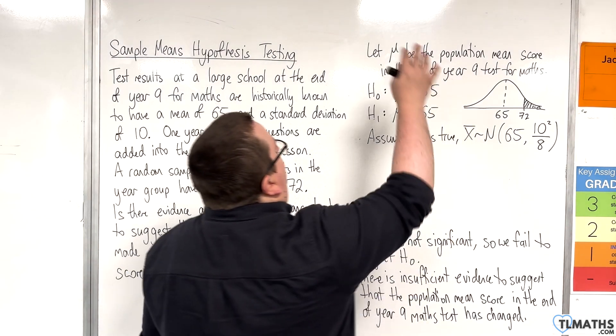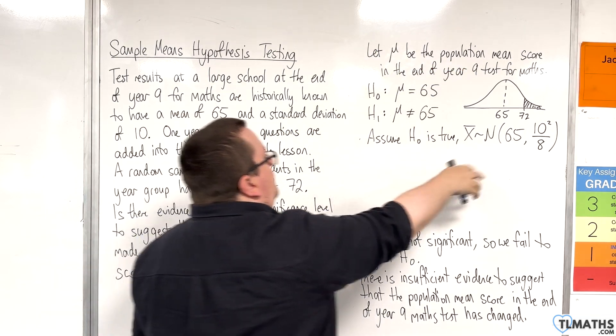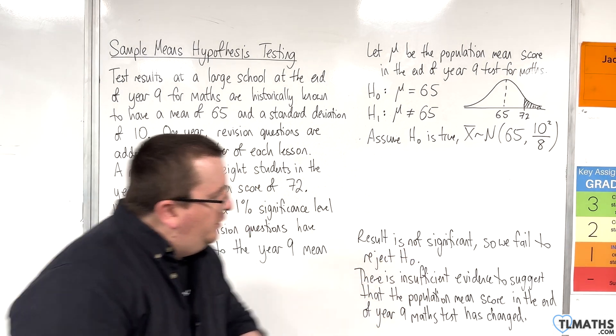I've got everything set up. I've got my definition of mu, the null and alternative hypotheses. I've set up the sample means distribution. I know what the conclusion is.